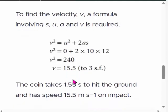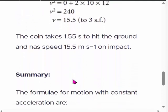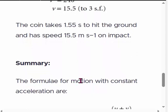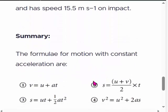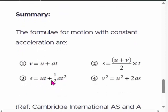Summary: The formulae for motion with constant acceleration are: (1) v = u + at, (2) s = (u + v)/2 × t, (3) s = ut + ½at², and (4) v² = u² + 2as.